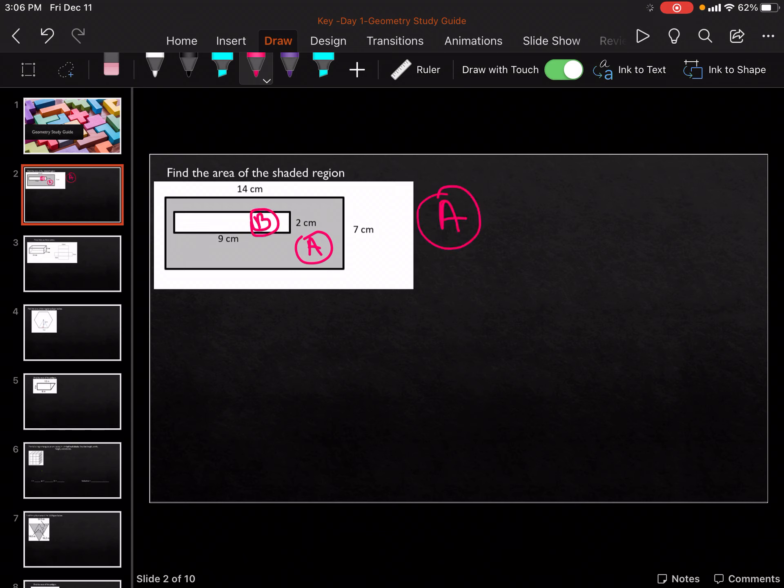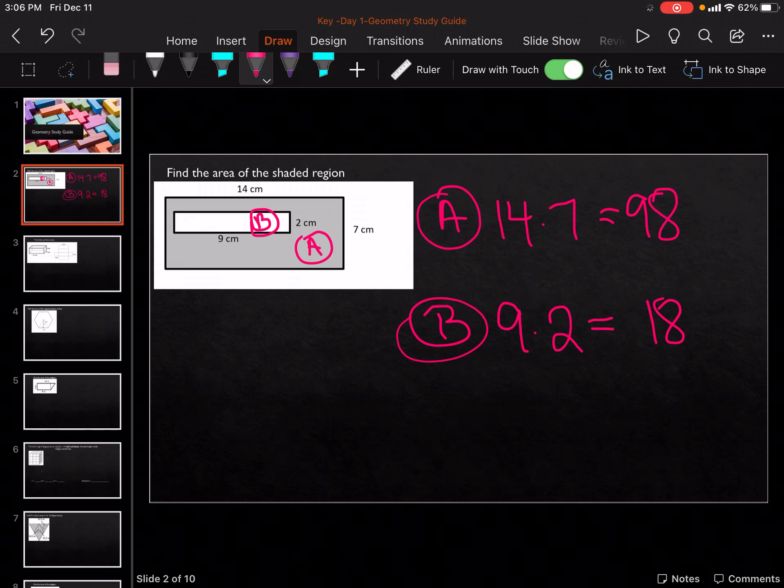So for A is the whole shape. So 14 times 7, which is 98. And then for B, the rectangle inside is 9 times 2, which is 18. Since we're taking that part out, it's going to be 98 minus 18, which gets us 80. And our units are centimeters squared.